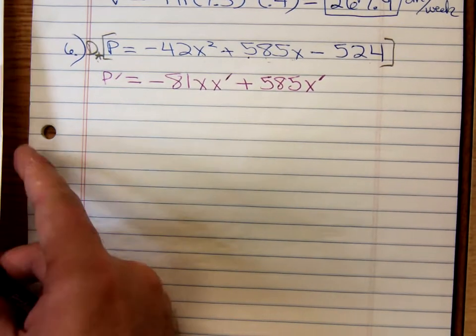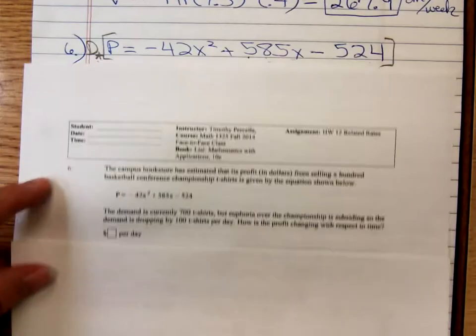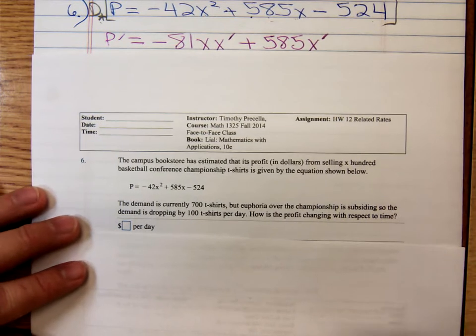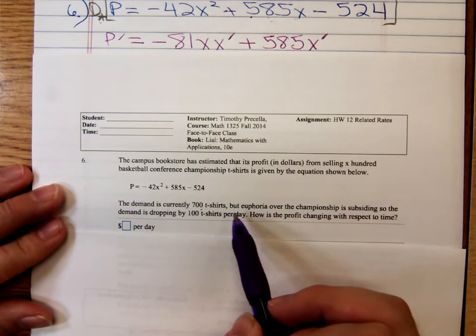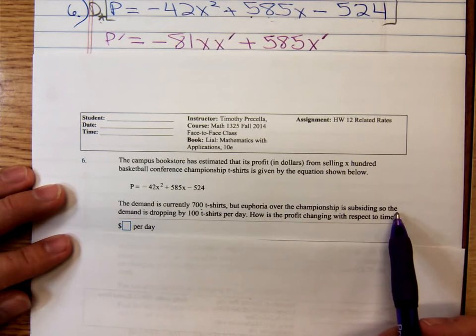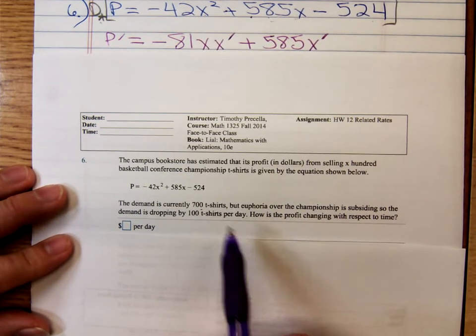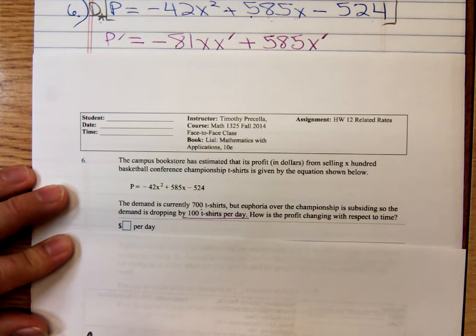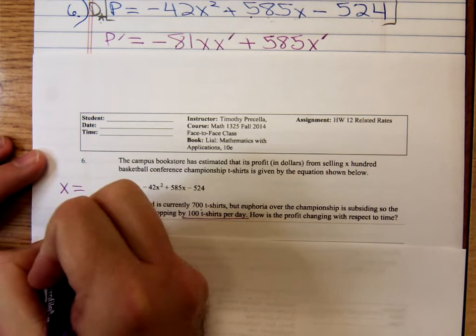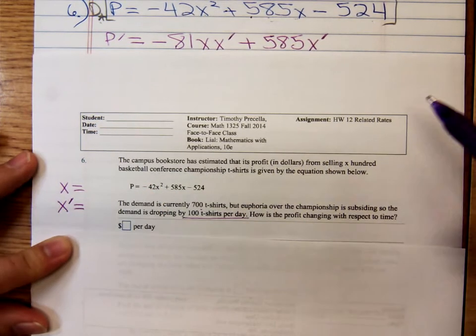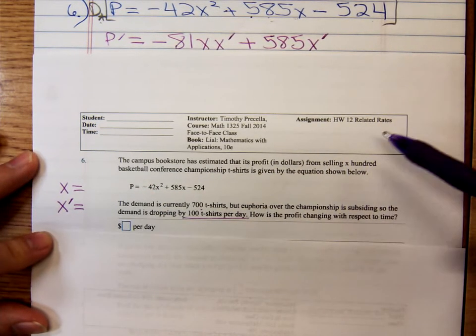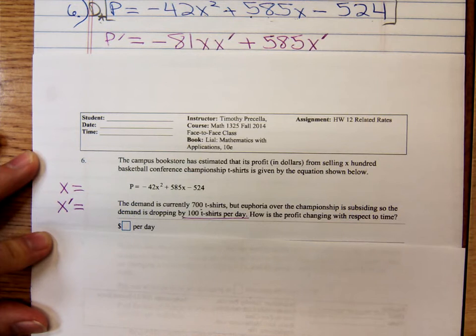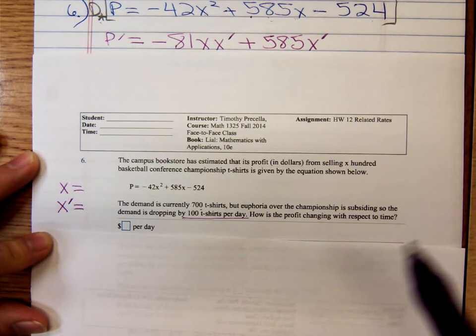So, let's come back now. This problem says, let's see, here it is. It says, the demand is currently 700 t-shirts, but euphoria over the championship is subsiding, so that demand is dropping by 100 t-shirts per day. That 100 t-shirts per day. That's the rate. So, they're giving us an x, and they're giving us an x prime. Remember that x is in terms of 100, let's see, for selling x 100 basketball conference t-shirts. So, we're not going to use 700 and 100. It's in terms of hundreds.